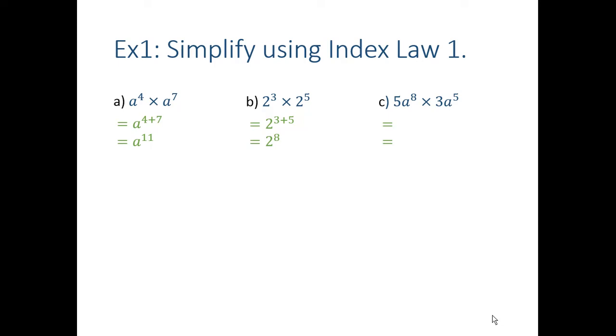However, looking at Part C, remember this number in front is called a coefficient. So we've got the 5 and the 3, which are the coefficients. Coefficients, we just do what we've always done with coefficients, and multiply them together as is, and then we are going to add the indices. So we end up with 5 times 3, and then a to the 8 plus 5, which gives me 15a to the 13. So that should be refresher.